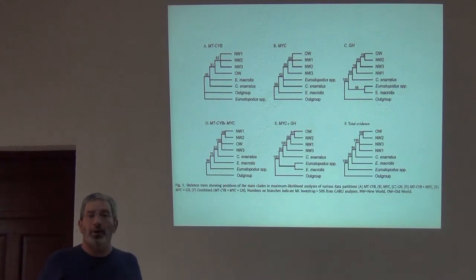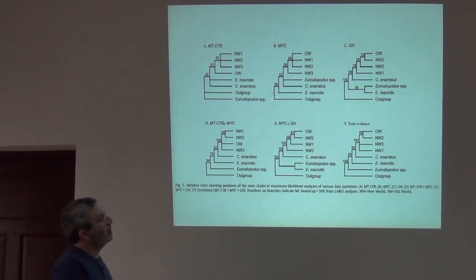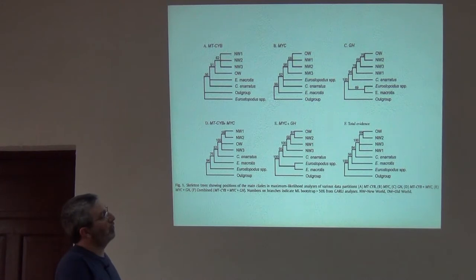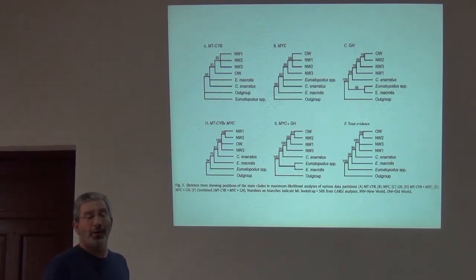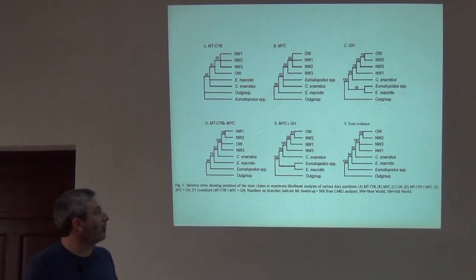For caprimulgids, right away the results were showing that Caprimulgus was not monophyletic. To orient you to this: each one of these trees has an outgroup of related families, then a pair of lineages — Eurystopodus, one species of Caprimulgus, then three clades of New World caprimulgids, and one monophyletic clade of Old World caprimulgids. That's a huge compaction. The real tree is much more detailed, and we're going to look at that in a moment.